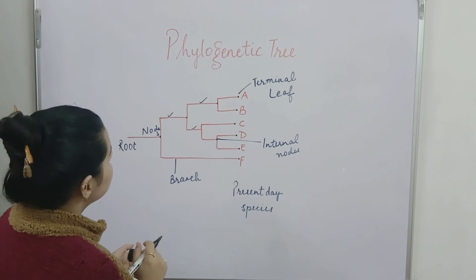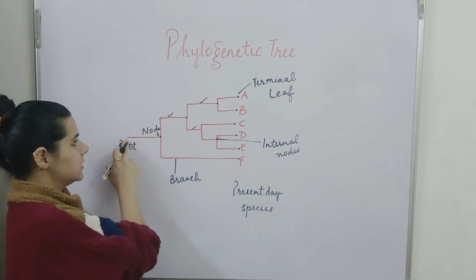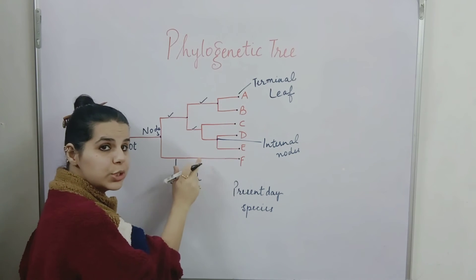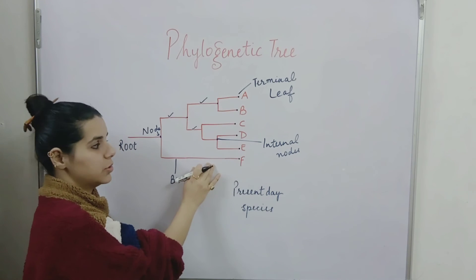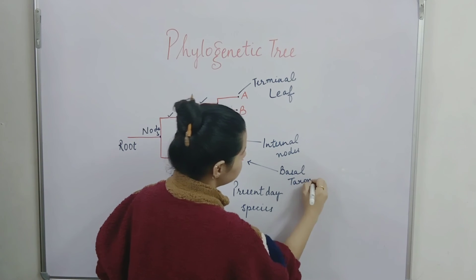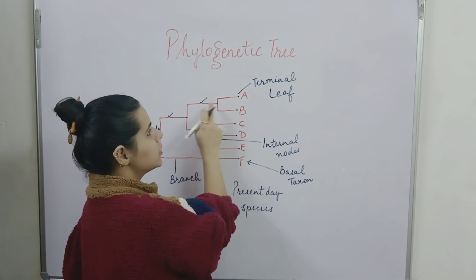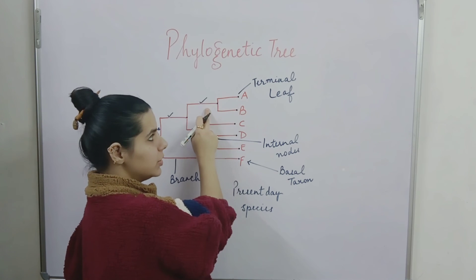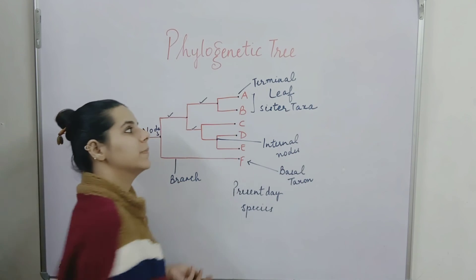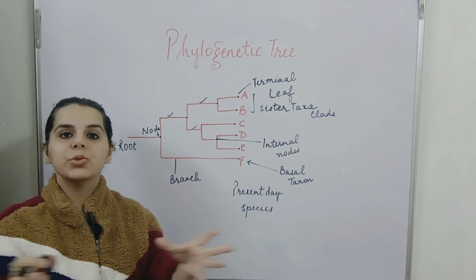One more point to consider: near the root, one branch comes out that is not branched further — it has no divergence. This unbranched lineage is known as the basal taxon. When from a single lineage two branches diverge, as with species A and B, they are known as sister taxa. If a lineage diverges into more than two branches, we call that a polytomy.